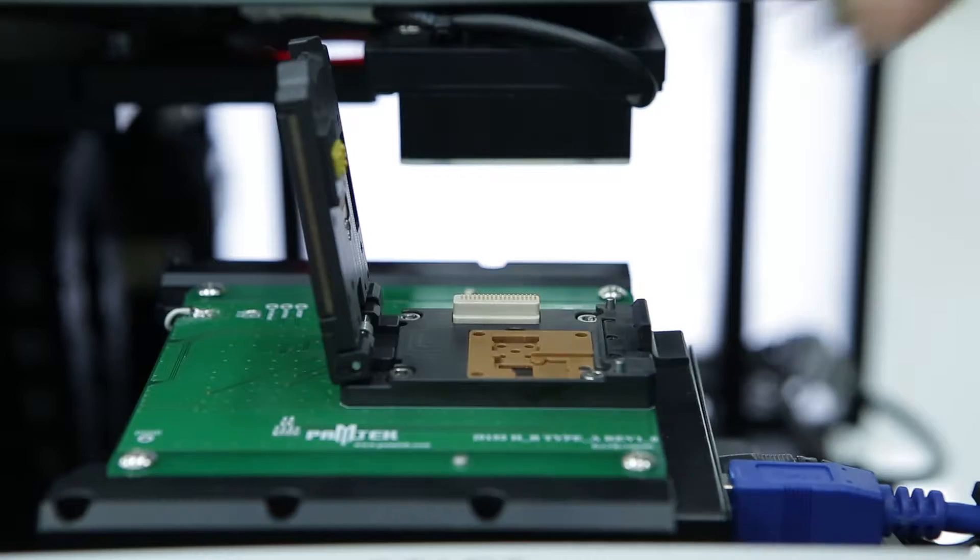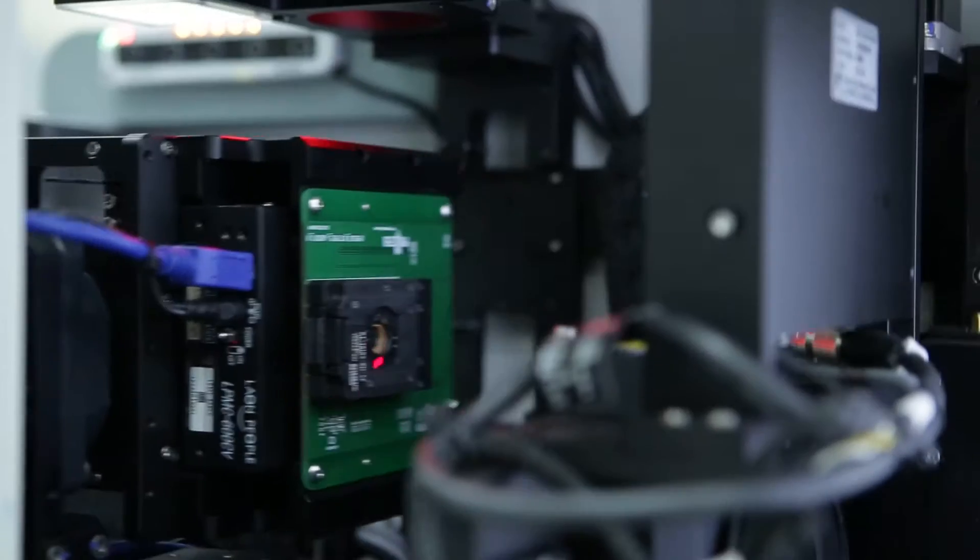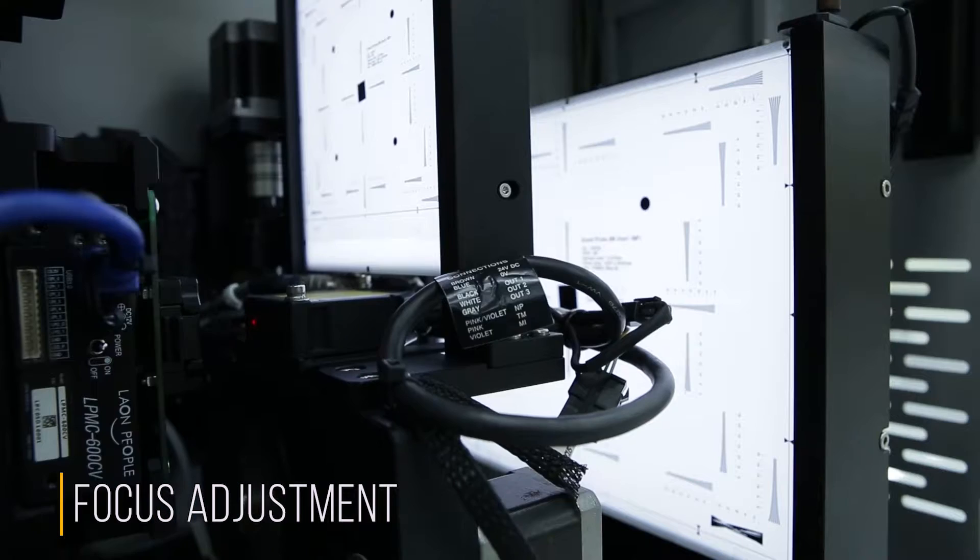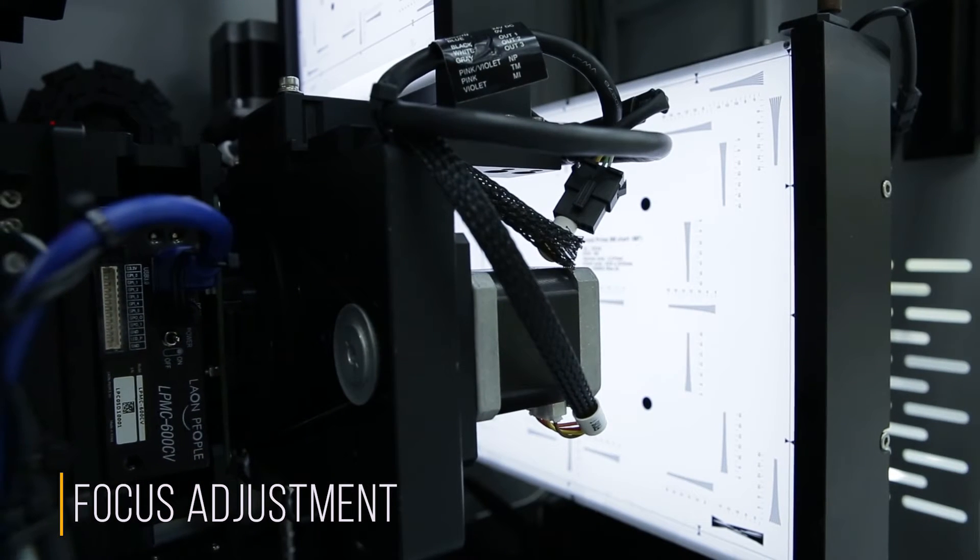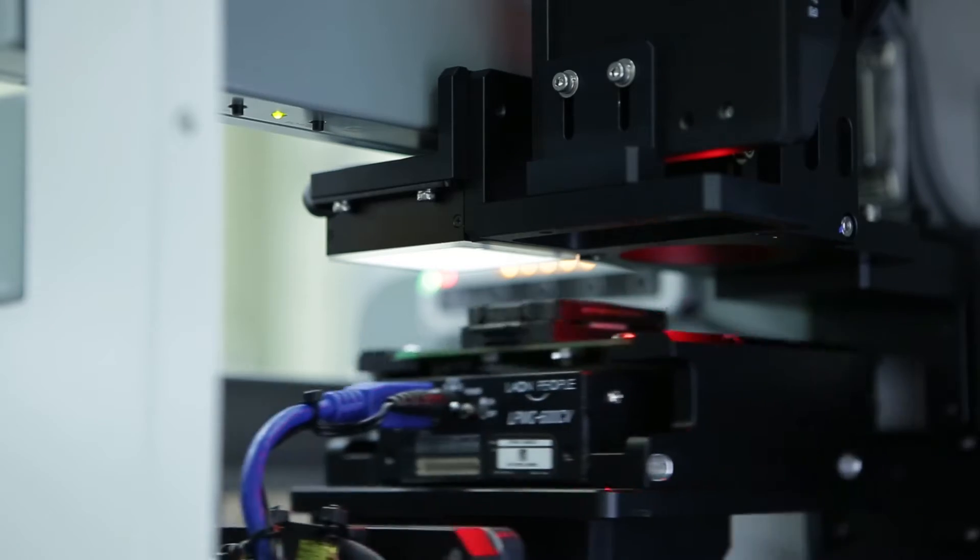PAMTECH's core technology is applied beginning from the active alignment process to the post process. Upon the completion of prior process, electric inspection and image inspection, including focus adjustment, are performed for camera modules.